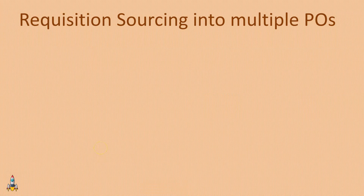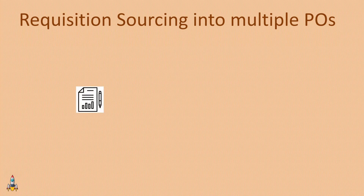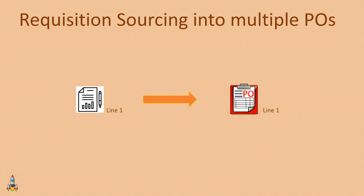Since we have learned about requisition sourcing, let me present a question. Suppose if we have a requisition with one line, when we run the sourcing process we will have one PO with one line. This scenario is quite simple and obvious.